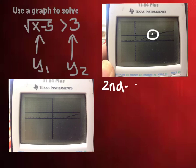So you're going to go second calc intersect, enter, enter, enter, and you will find that intersection. And it will give you that the answer there is 14. So this is 14 right here.